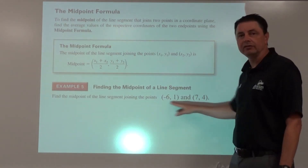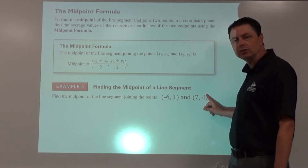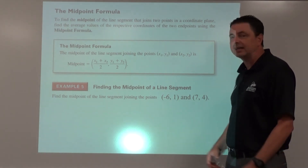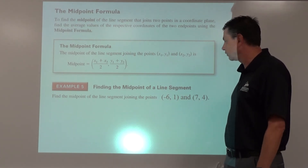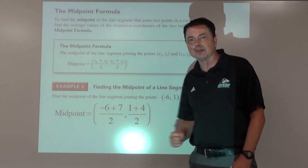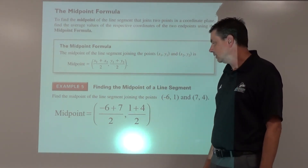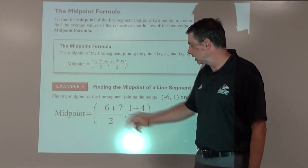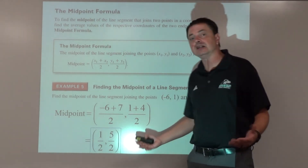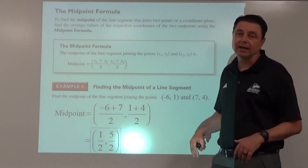This is a pretty easy one. We're going to add the two x coordinates, negative 6 and 7, and divide by two to find the average, and do the same for the y's. So negative 6 plus 7 divided by 2, and 1 plus 4 divided by 2. The midpoint is a point, so we put it in parentheses. Simplifying, we get one half comma five halves. If you need decimals, that would be 0.5 comma 2.5.